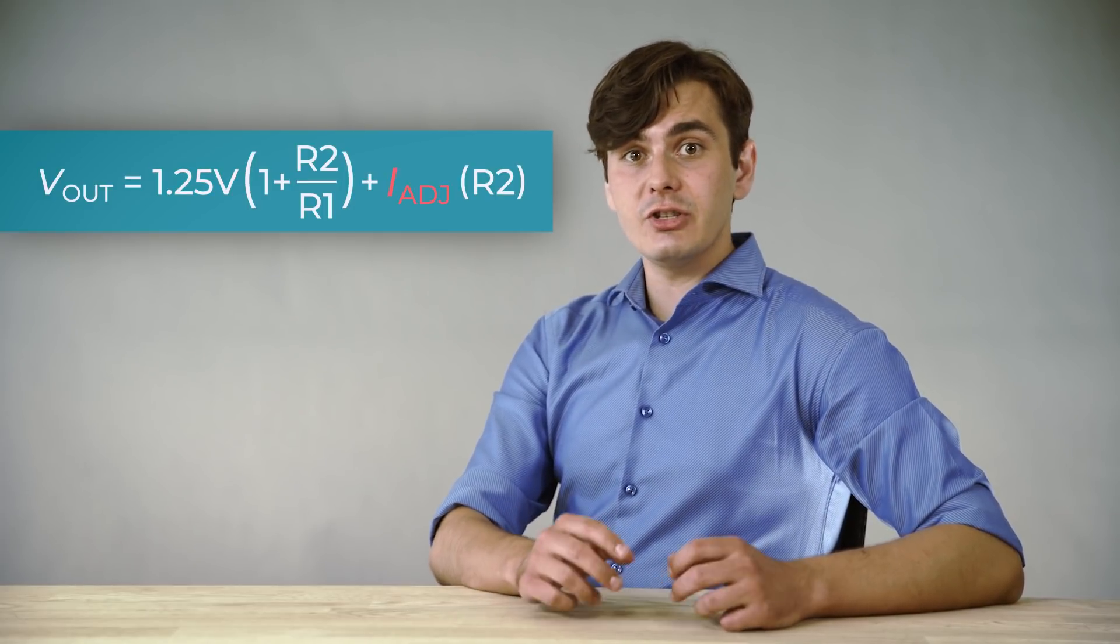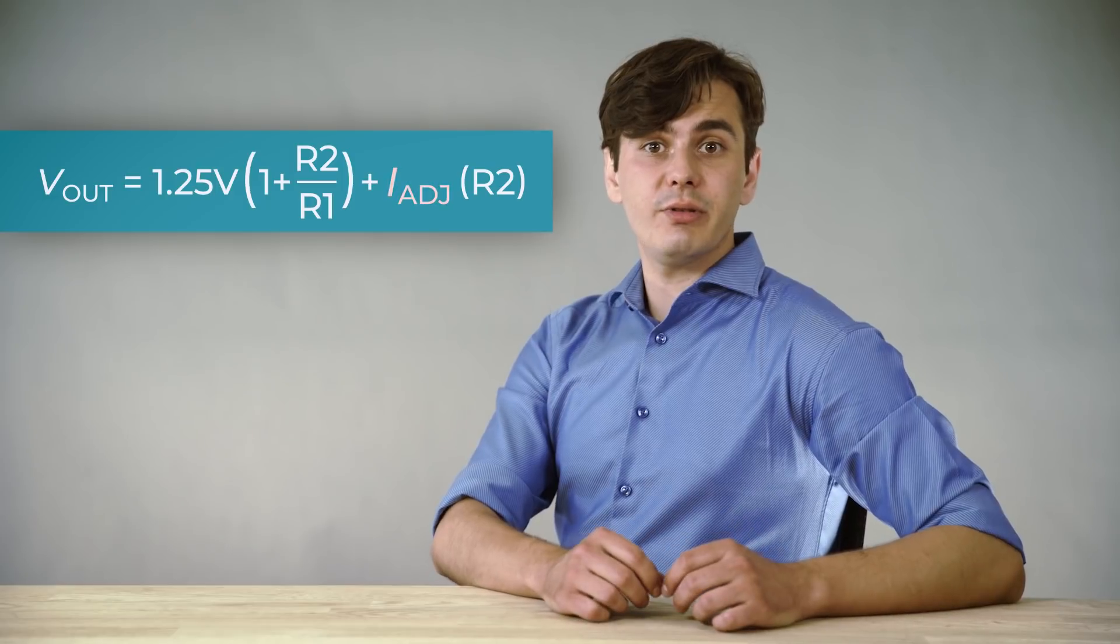In some cases, the adjust current can be omitted because it's pretty small. Unlike Zener diodes, LM317 and other linear regulators can output currents greater than 1.5A.